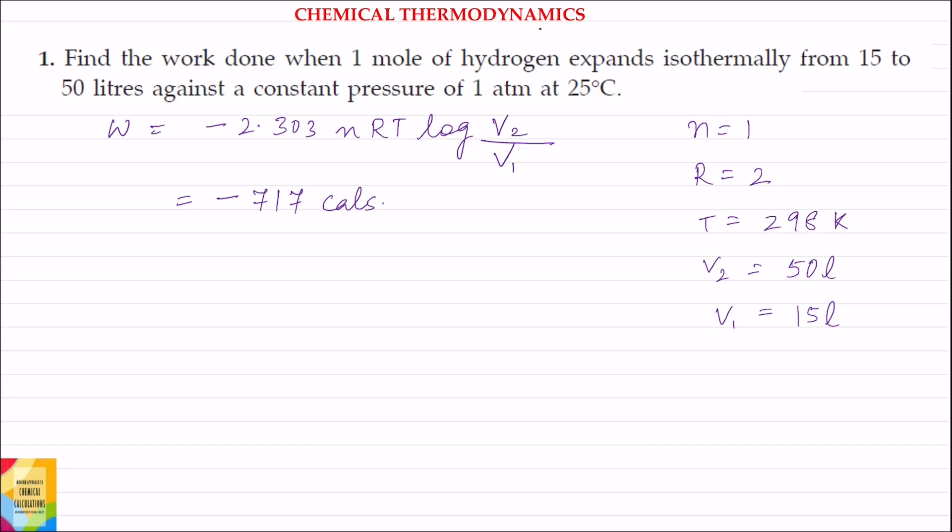Find the work done when 1 mole of hydrogen expands isothermally from 15 to 50 liters against a constant pressure of 1 atmosphere at 25 degree centigrade.